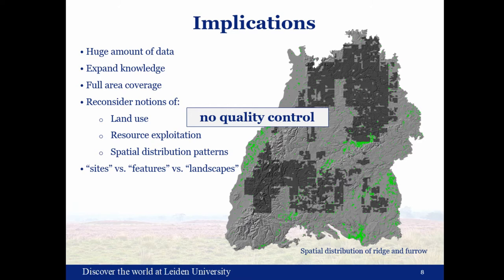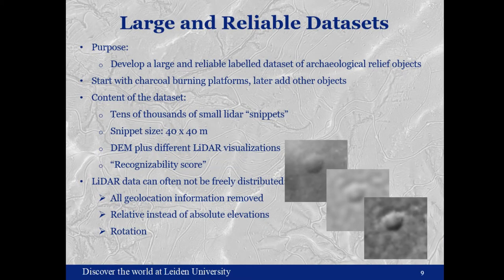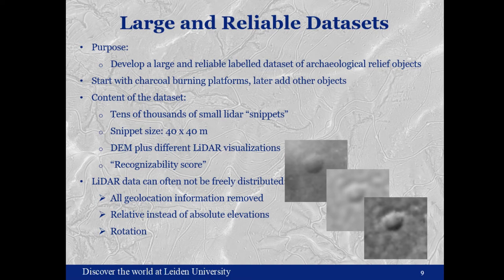But there are two problems. One is that there is essentially no quality control — neither a second pair of eyes looking at the data, nor field verification to speak of for that number of mapped objects. Another is that this 10-year mapping effort covered less than one per mil of the world's land surface. But using neural networks and machine learning can help us with both of these issues. The purpose of this is to develop a large and reliable labeled dataset of archaeological relief objects.